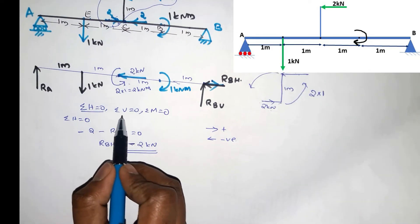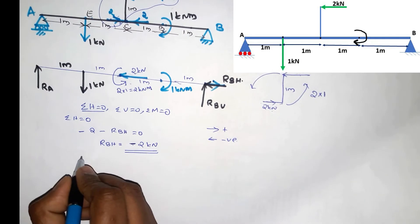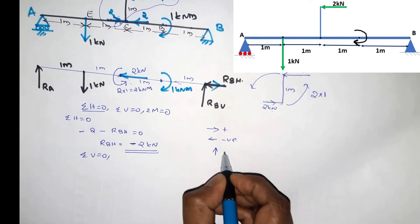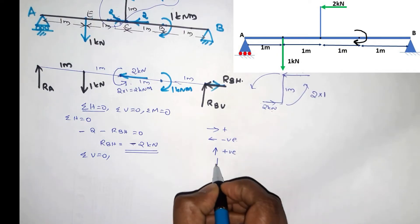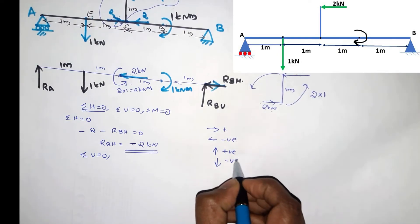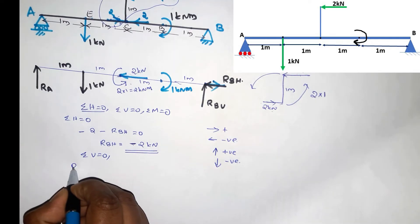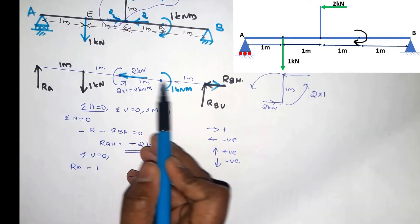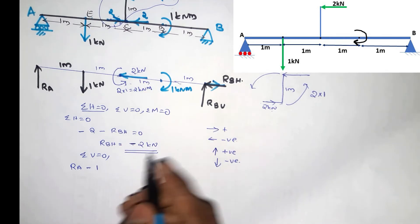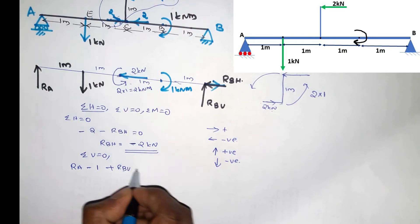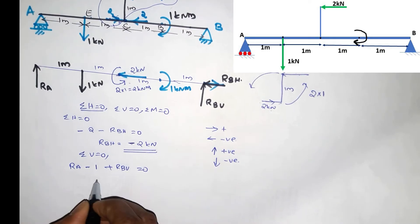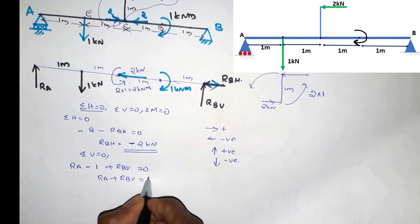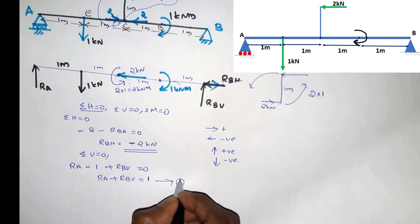Now the equation is σV equal to 0. If we take the equation σV equal to 0, the sign convention is: force upward is positive, force downward is negative. First force Ra, minus 1, plus Rbv is equal to 0. Ra plus Rbv equals 1. This is equation number 1.